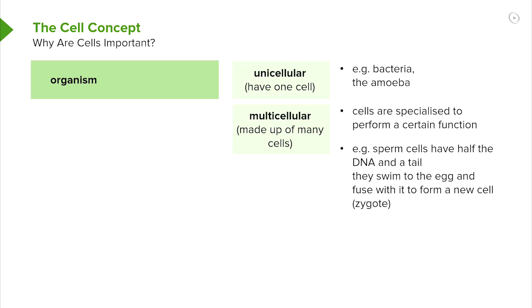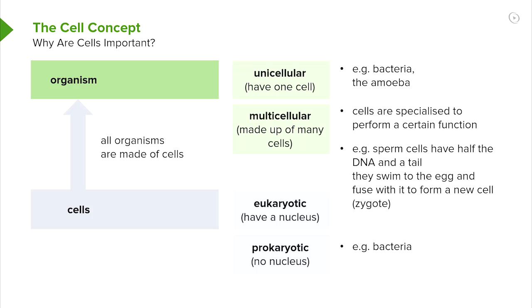A sperm cell has got a flagella — it's a long tail that helps it to swim. It's the only type of cell that has that, but it has it for a particular reason. Its function is to carry the genetic material to meet the egg so that they fuse and you have a zygote which can develop into a new organism. Cells are divided into eukaryotic, which have a nucleus — plant, animal, and fungal cells — and prokaryotes, which are bacteria, which don't have a nucleus within them.